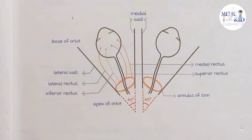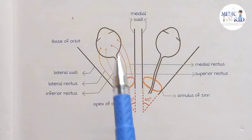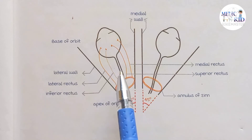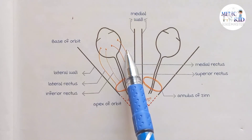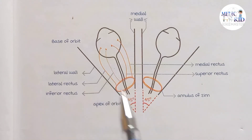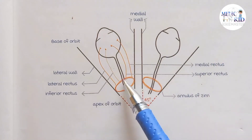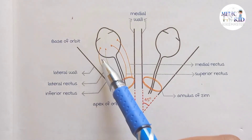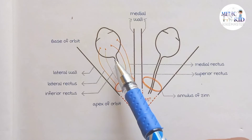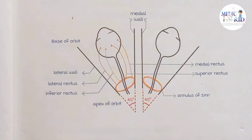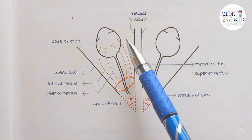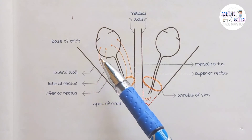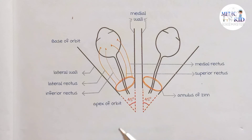The recti muscles attach to the eyeball: the superior rectus, medial rectus, inferior rectus, and lateral rectus. The annulus of Zinn and the recti muscles form a cone. The space inside this muscle cone, just behind the eyeball, is where we give a retrobulbar injection. If we give the injection around this cone — outside it — it is known as the peribulbar route, which is used for local anesthesia.